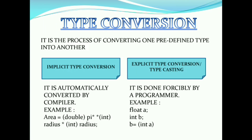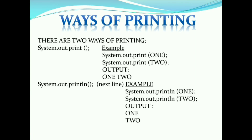This is also very important for class 9 because your teachers will ask about it. There are two types of ways for printing. System.out.print and System.out.println work differently. If you use print, output 1 and 2 will come on the same line. If you use println, output 1 will print and then move to the next line. So println moves to the next line after printing, while print does not.